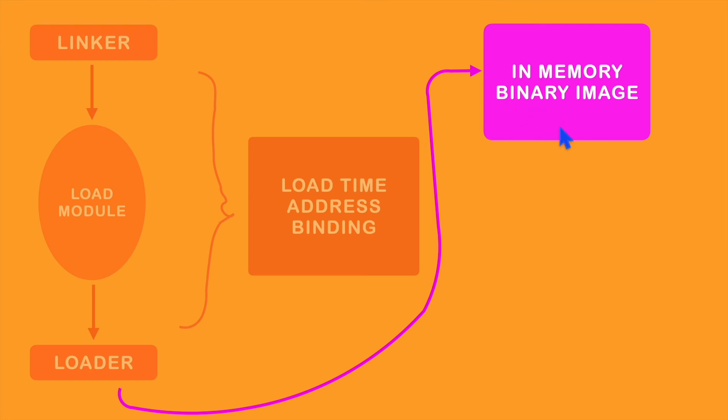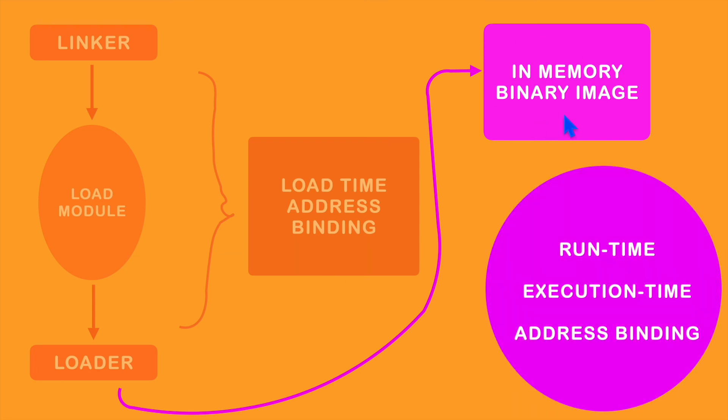During this execution, whatever mapping was not done before during compile time or load time, those address mappings will be done at run time. This kind of address mapping is known as run-time or execution-time address binding.